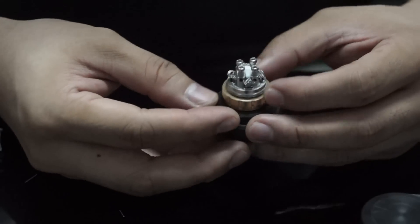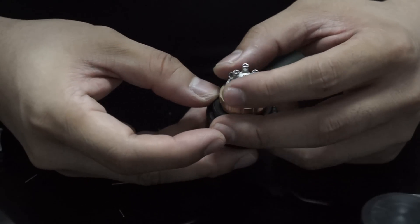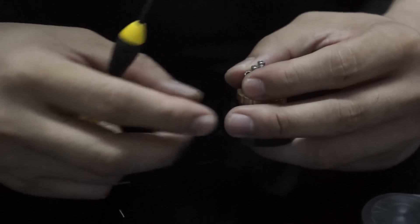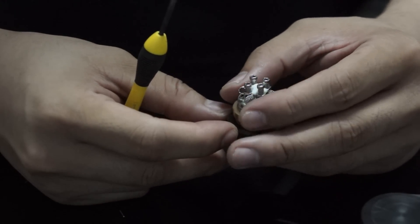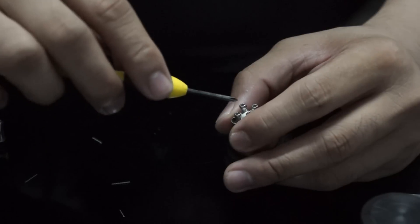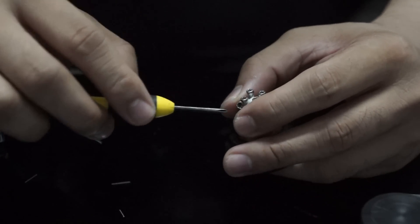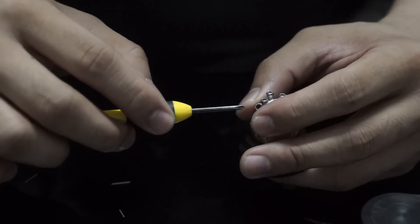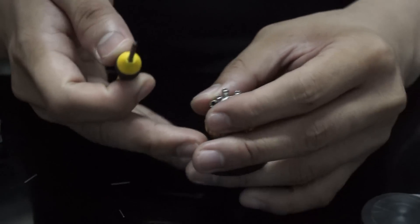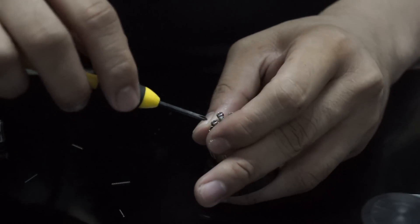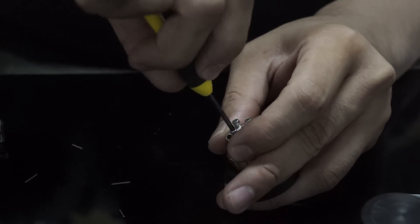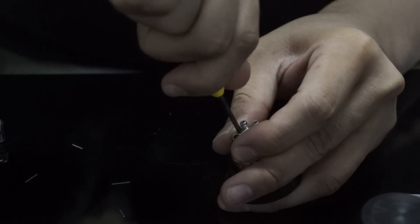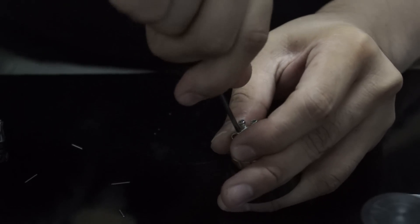So the next step that I'll do is I'll go ahead and screw these bad boys. So what I'm going to do is that if I'm going to screw this side right here, I'll need to hold two sides of the coils just to make sure that they're stable.